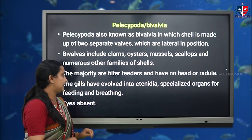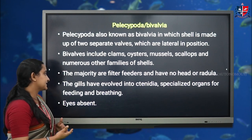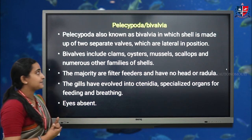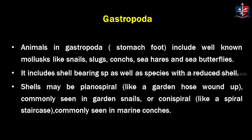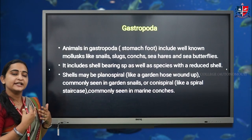Bivalvia do not have a head or radula. The gills have evolved into ctenidia — specialized organs for both feeding and breathing. Eyes are absent in Bivalvia. The two valves are composed of calcium carbonate and are usually of similar parts. Examples shown include clams, oysters, and scallops.